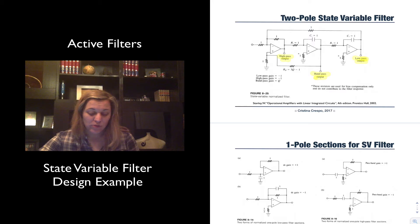The low-pass filter has a corresponding gain of negative 1, the high-pass filter has a corresponding gain of negative 1, and the band-pass gain will be the value of Q, which you can see is set by this resistor RQ of value 3Q minus 1.